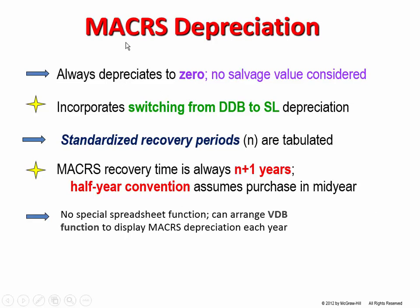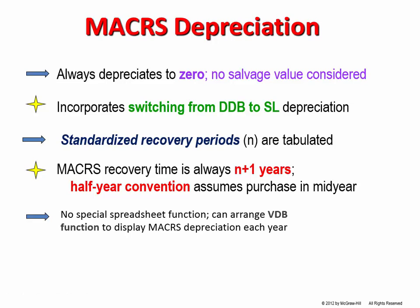In this depreciation system, MACRS, it always goes to zero. Even if the equipment in real life is going to have salvage value, you still get to capture all of the depreciation according to this method. That's a pretty big difference from an accounting perspective compared to the methods we've looked at so far. The way this works is that it has both straight line and double declining balance — DDB. Last time we looked at declining balance, and if you have 200% declining balance, another word for that is double declining balance.